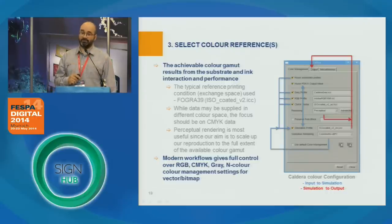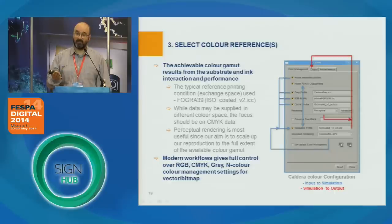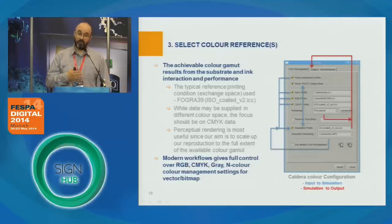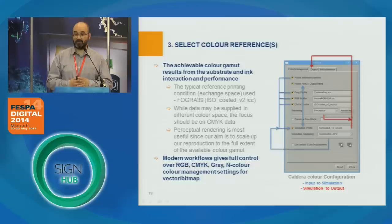Why are we using perceptual? Remember that our measurement is done in relative mode, meaning our substrate white point is LAB 100,0,0. So we are going to use perceptual, but our data are already relative colorimetric. Using perceptual only ensures that we are scaling up our reproduction to the full extent of the output color gamut. This is why we use perceptual for this particular application.